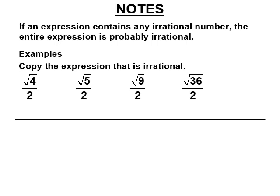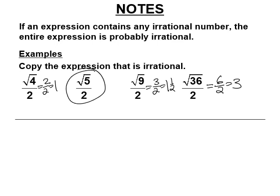If you have an expression that has an irrational number in it, the whole thing is probably irrational. I could make a trick question where that's not true, but I'm not going to for you guys. So find the square root that's irrational, and that whole expression is probably irrational. Square root of 4 is 2, so this is 2 over 2, which is 1. Square root of 9 is 3, so this is 3 over 2, also known as 1 and a half. Square root of 36 is 6, and 6 divided by 2 is 3. But this has the square root of 5 in it — you take a number that goes on forever, divide it by 2, and it still goes on forever.